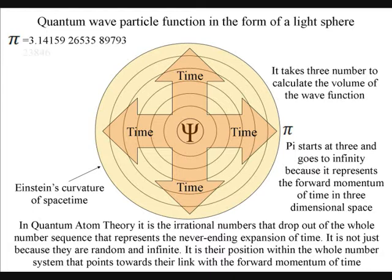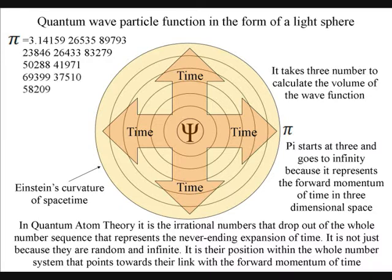In Quantum Atom Theory, the irrational number pi is a physical constant and represents the expanded curvature of spacetime. It is not just because it is random and carries on expanding forever. Its position within the whole number system points towards its link with the forward momentum of time.